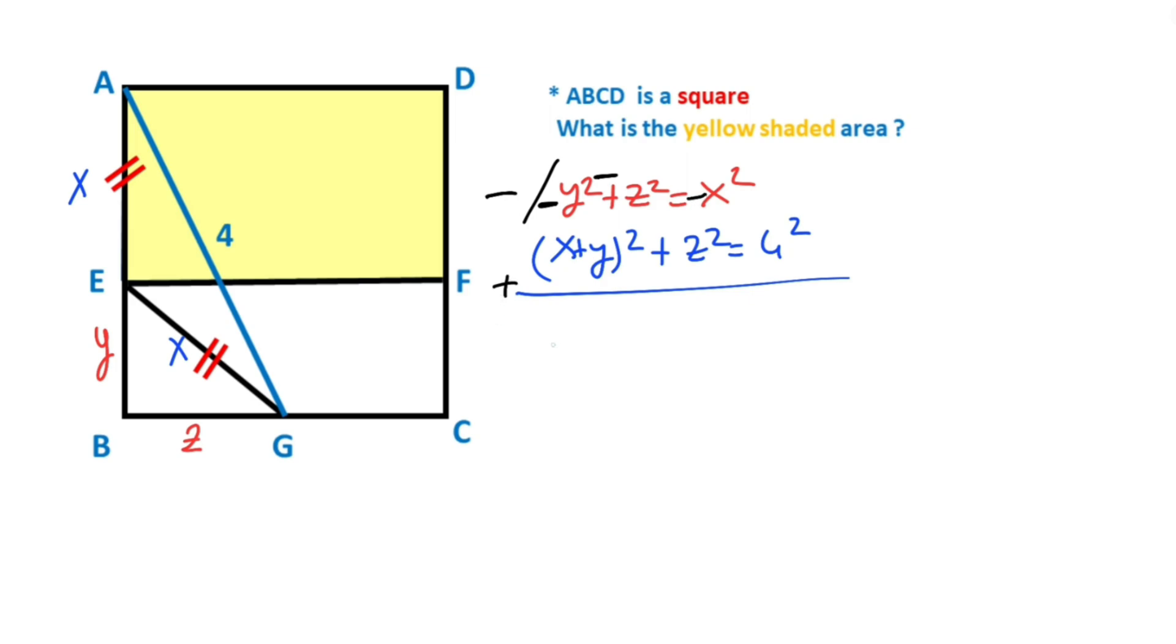And then the sum of these two equations equals minus Y squared minus Z squared plus X plus Y squared plus Z squared, which must equal minus X squared plus 16.